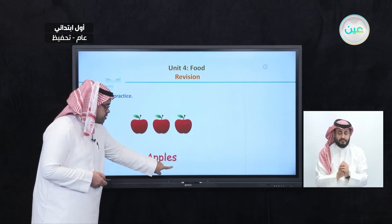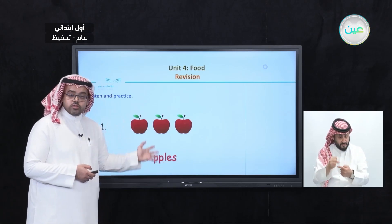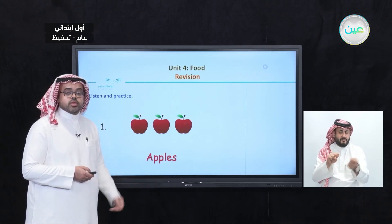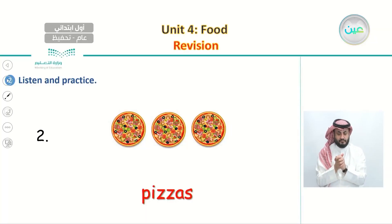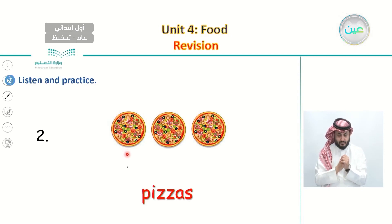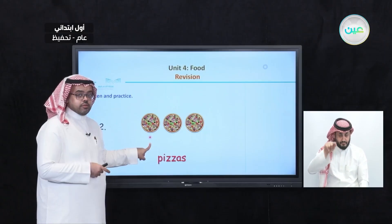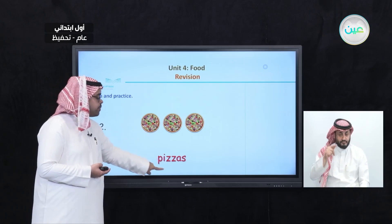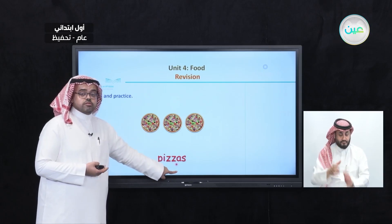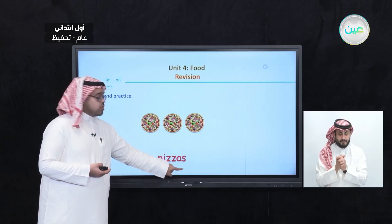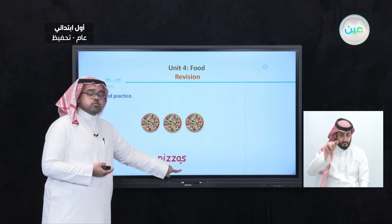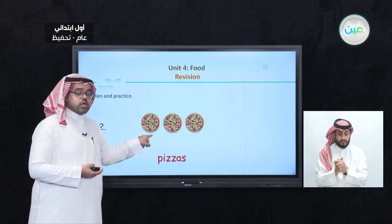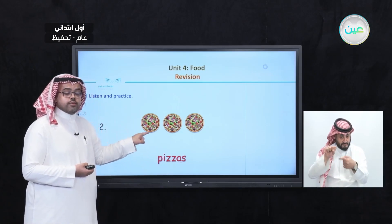Here we add S when we have three, so we say three apples. Number two: this is one pizza. If we have three, we say these are pizzas. Here we add S to the end because we have three — three pizzas.